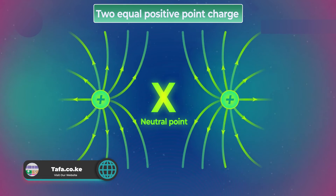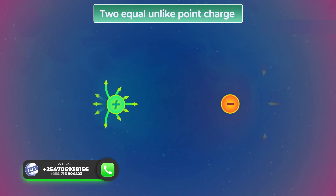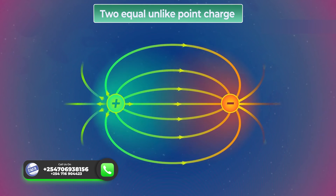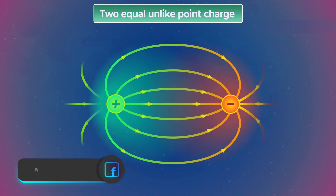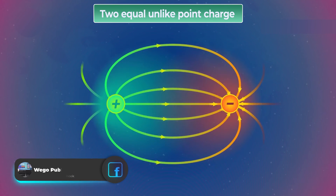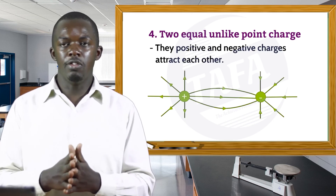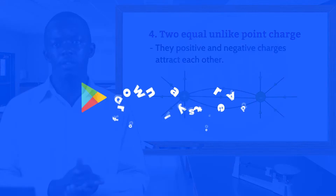The next field pattern is two equal unlike point charges — a positive and a negative charge. Unlike charges will always attract each other. From this diagram you can see the field lines are directed from the positive to the negative charge because the positive and negative charges attract each other as they are unlike charges.